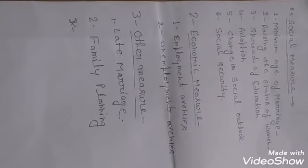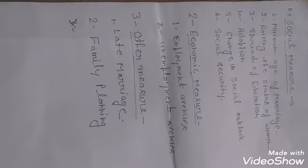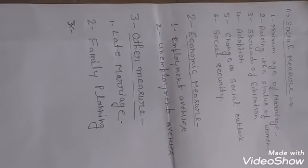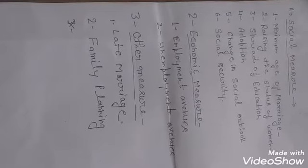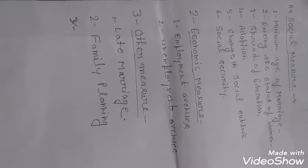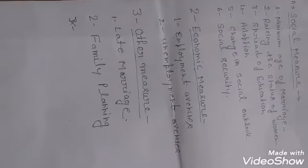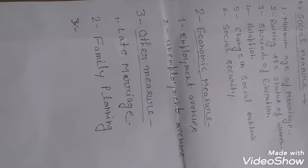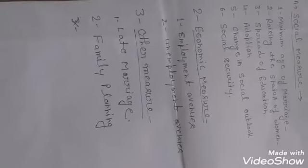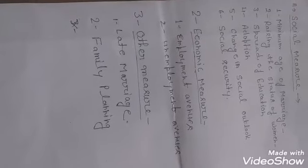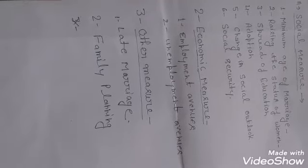Under economic measures, the government and individuals can work together. If the government establishes small industries, it helps solve employment problems and thereby contributes to controlling population explosion.